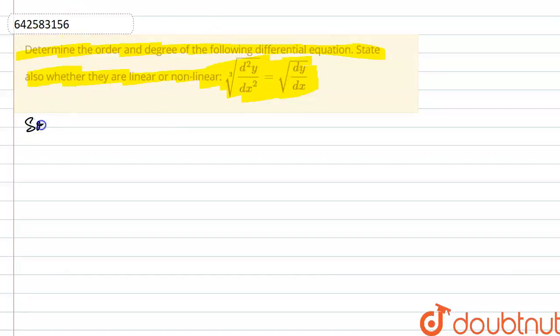We are given a differential equation which is cube root of d2y by dx square is equals to square root of dy by dx.